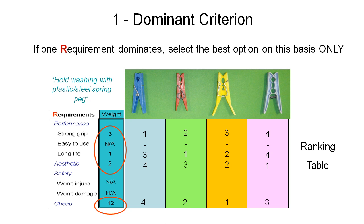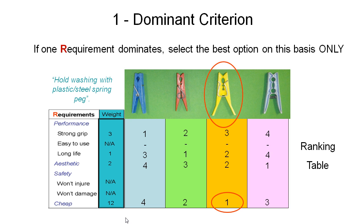In cases where you have one criterion dominating in terms of weightings, it doesn't really matter how well each option scores on the secondary weighted requirements. Whichever one comes out on top in the most important criterion is going to be the one you choose regardless of the method, so you might as well just cut to the chase. In this case, the yellow peg is rated the cheapest, so due to that weighting we choose that one and eliminate the other options.